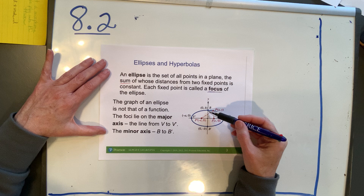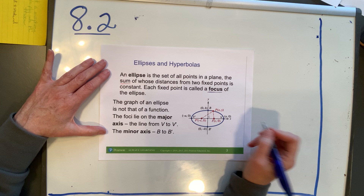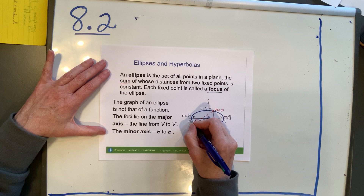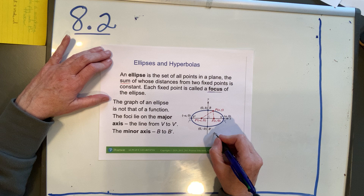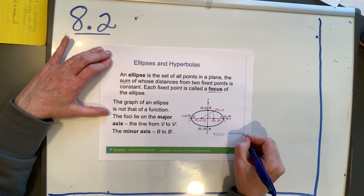The minor axis is the shorter axis. The foci are not on the minor axis — they're always on the major axis. When you talk about the vertices of an ellipse, you're always talking about these two points here. The vertices of an ellipse are the endpoints of the major axis.